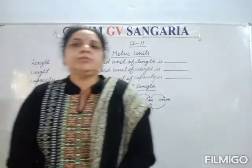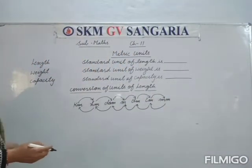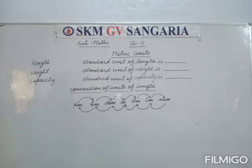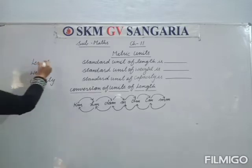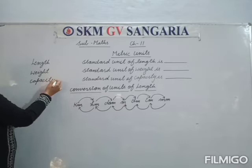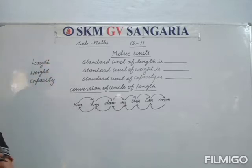The Metric system is an international system of metric units. There are some base units in the Metric system for Length, Weight, and Capacity.